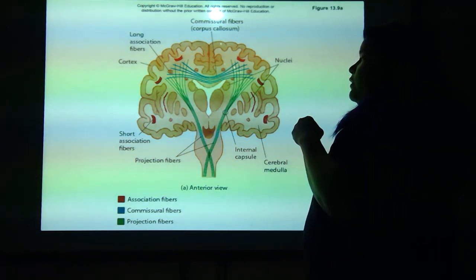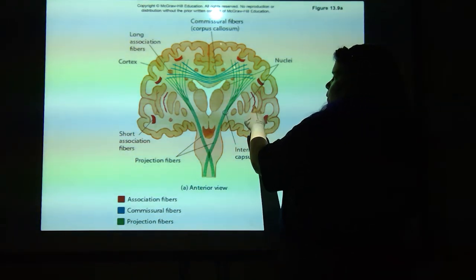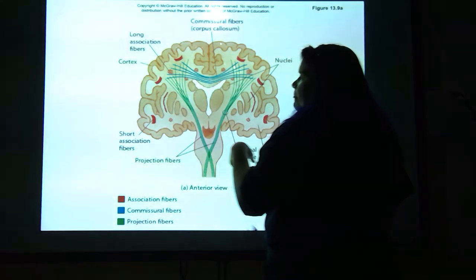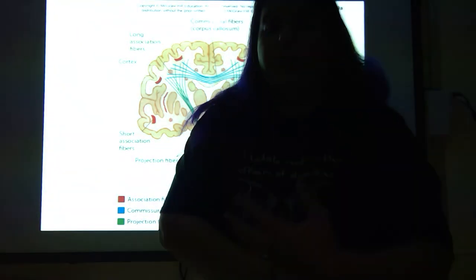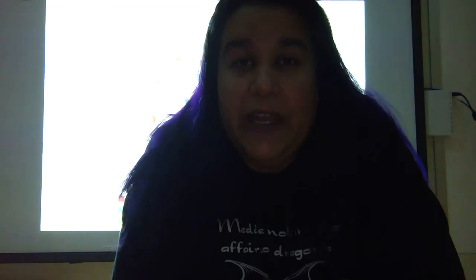We also have these little red fibers here — these are called association fibers. Association fibers are basically like going to your neighbor's house. Within the same hemisphere, you have little highways to connect parts of that hemisphere. So if you want to go from one area to another within the same hemisphere, the highway you use is an association fiber.